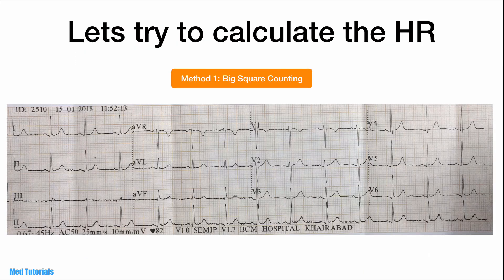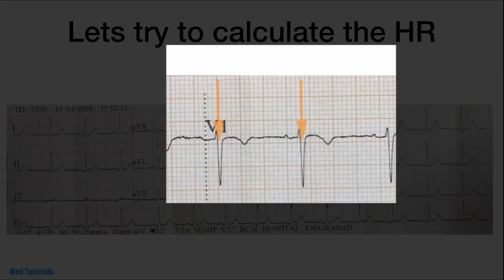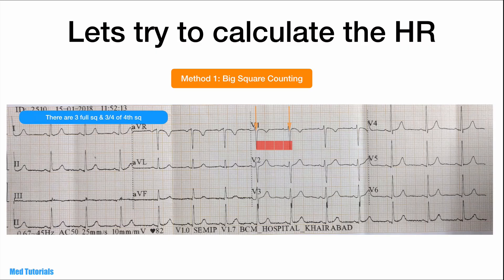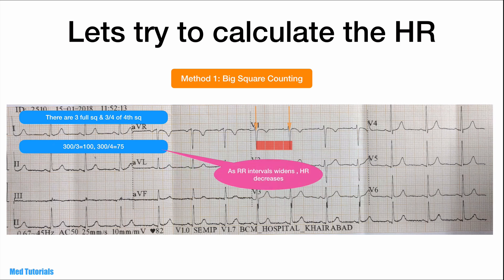Let's try out what we've learned on an ECG. Starting with method 1, the big square counting method — look for the QRS complex that starts on a big square to make counting easier. We see there are 3 and three-quarters big squares. Using the formula 300 divided by the number of big squares: 300 divided by 3 is 100, 300 divided by 4 is 75. So the heart rate is between 75 and 100, closer to 75 — probably around 80.